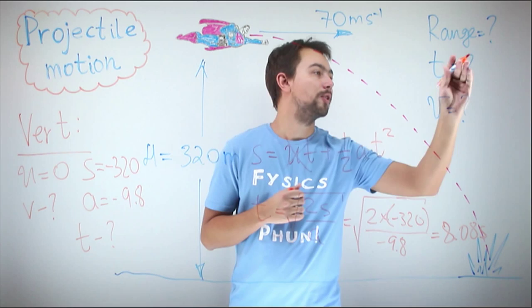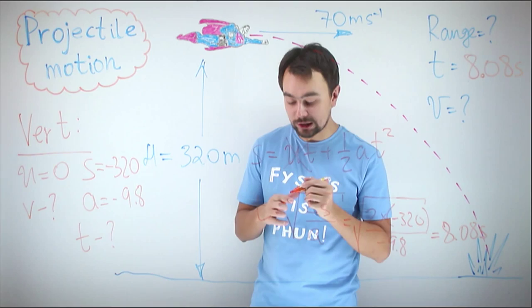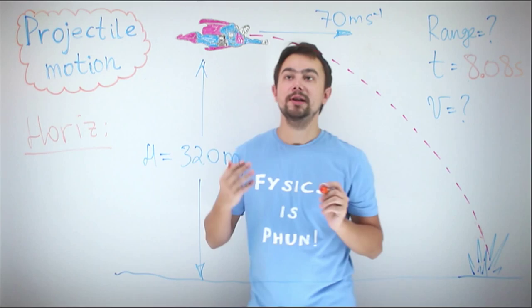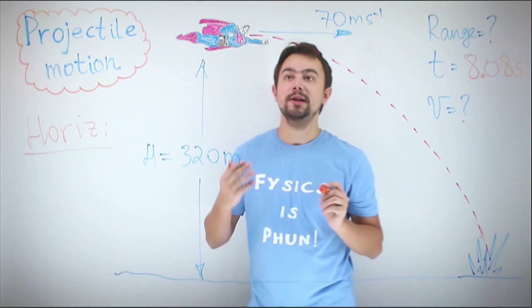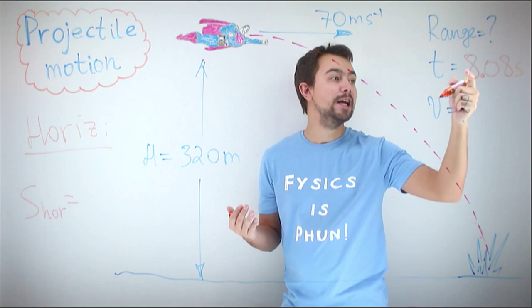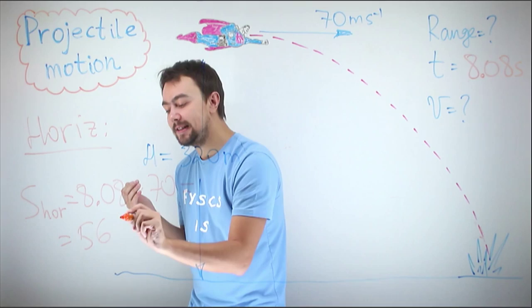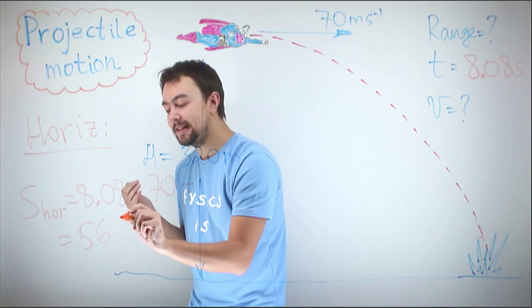We need to find the final velocity and the range. Horizontally, Superman is moving at a constant velocity of 70 meters per second, and the time of flight is 8.08 seconds. So the horizontal displacement, or range, equals 8.08 times 70, which gives us 566 meters. That is the range of Superman.